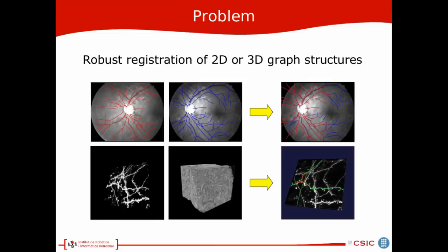The problem we are going to deal with is robust registration of 2D or 3D graph structures, like the ones we can see in these images, like retina vessels from angiographies, or neurons appearing in brain image stacks.